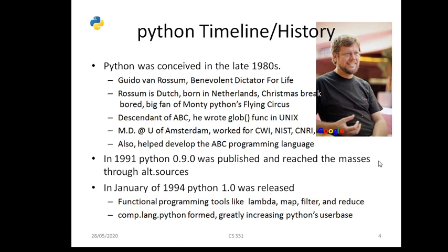In January 1994, Python 1.0 was released, including functional programming tools such as map, filter, and reduce, all of which are available in Python.